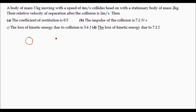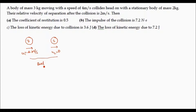First, draw the figure pertaining to the problem. Even if it is an objective question, try to solve it through the figure, because drawing a sketch makes the problem much easier — you get a rough idea about the problem. A 3 kg mass body is moving at 4 m/s and collides with a stationary ball of 2 kg. The velocity is U1 = 4 m/s, U2 = 0. After collision the 3 kg body moves with V1 and the 2 kg body moves with V2.